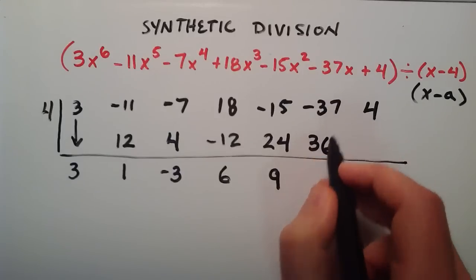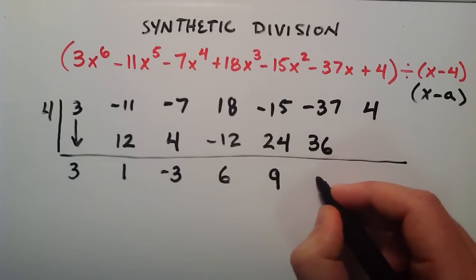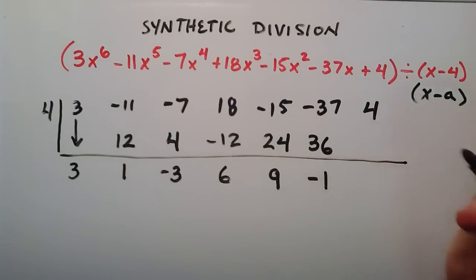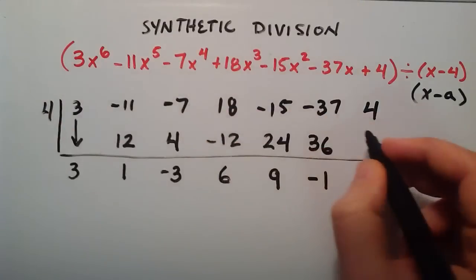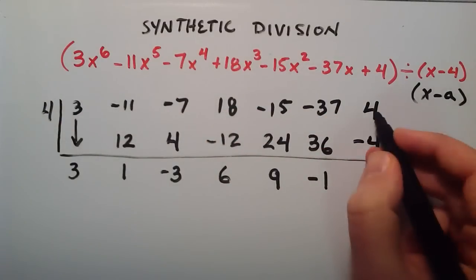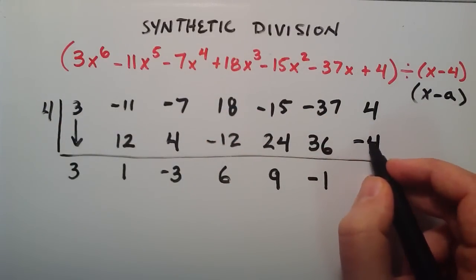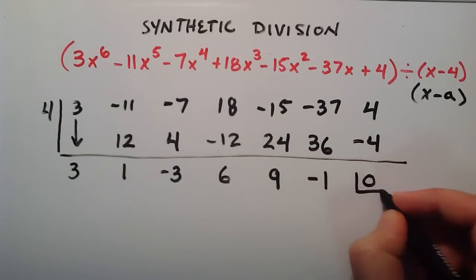And a negative 37 plus a positive 36 is going to give us a negative 1. Negative 1 times the 4 gives us a negative 4. And 4 plus a negative 4 gives us our remainder of 0.